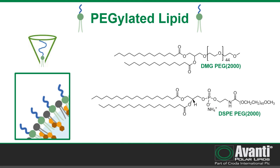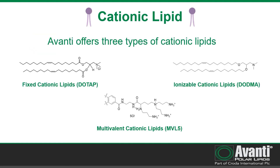The largest portion of the particle is the cationic lipid, coming in at almost 50% of the total lipid composition. The cationic lipid plays two incredibly important roles. The cationic portion of the lipid interacts with the negative charge on the nucleic acid to form a complex, which results in high encapsulation efficiencies within the particle. Then, the cationic lipid aids in the release of the nucleic acid inside the cell's cytoplasm.